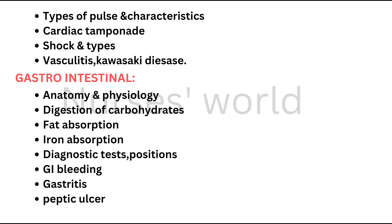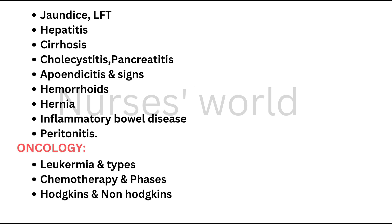Gastrointestinal system — anatomy and physiology. Digestion of carbohydrates, fat absorption, iron absorption. Diagnostic tests, positions for procedures like sigmoidoscopy and colonoscopy. GI bleeding, gastritis, peptic ulcer, jaundice and types, LFT, hepatitis, cirrhosis, cholecystitis, pancreatitis, appendicitis and its signs, hemorrhoids and types, hernia, inflammatory bowel disease, and peritonitis.